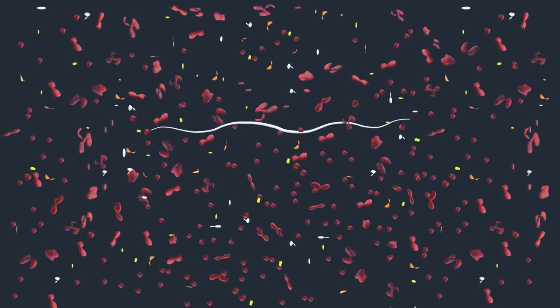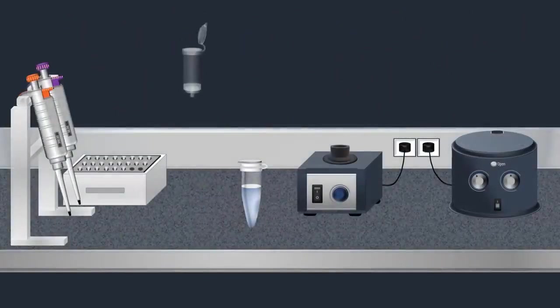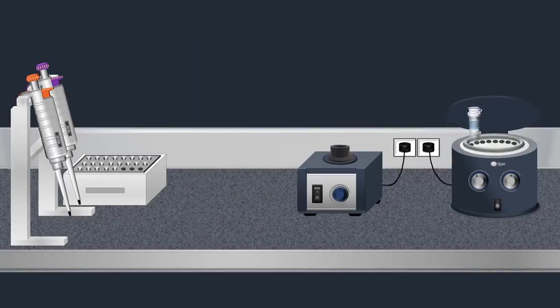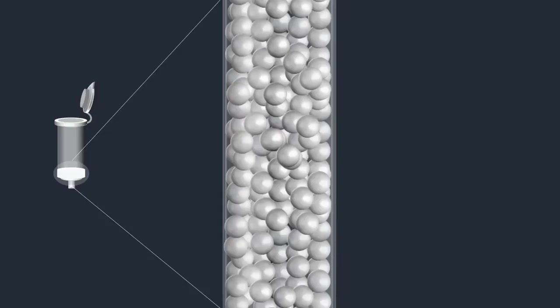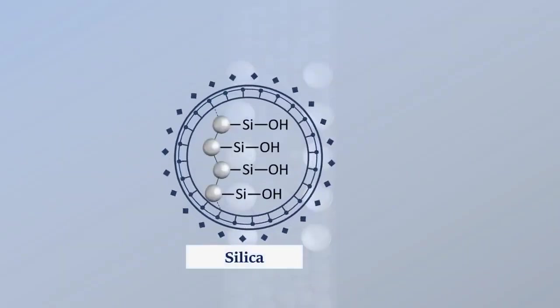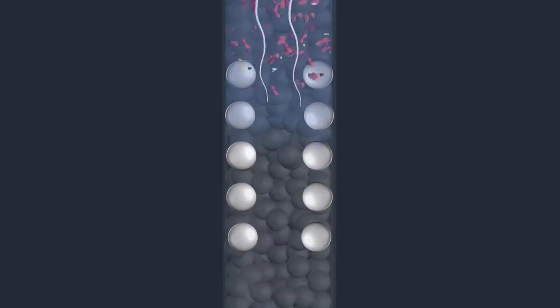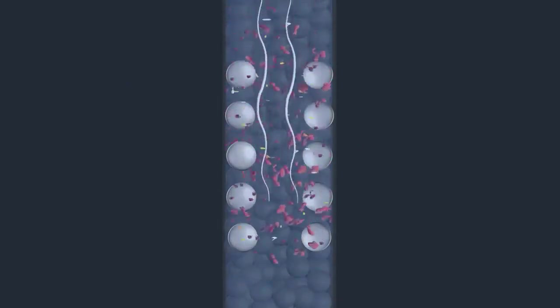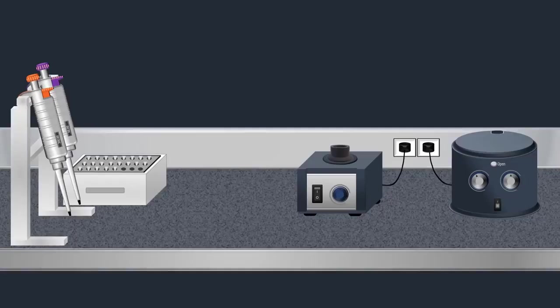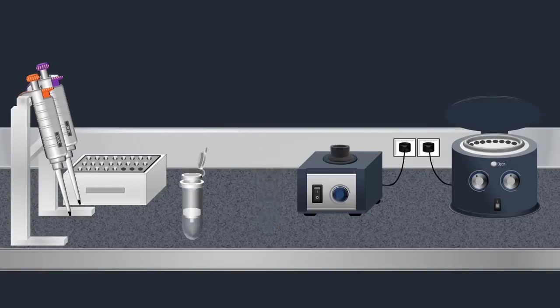Once the sample is lysed, a purification procedure is carried out using a spin column. The sample is loaded onto the spin column, then centrifugation is performed. This procedure is a solid phase extraction method in which the stationary phase consists of a silica matrix. Under optimal salt and pH conditions, RNA molecules bind to the silica gel membrane while protein and other contaminants are not retained. After centrifugation, the spin column is placed into a clean collection tube and the filtrate is discarded.